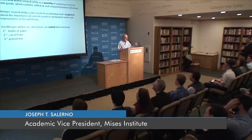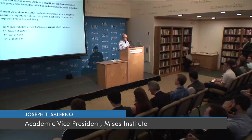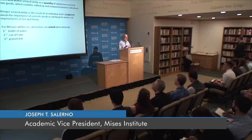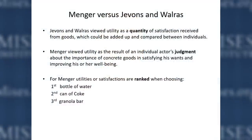To sum up: Jevons and Walras viewed marginal utility — or utility, which is another term for satisfaction — as a quantity that could actually be added up, subtracted, divided, multiplied. You could perform mathematical operations on it. But Menger viewed utility as a result of individual actors' judgment about how important something was to their own welfare — whether one thing improved their welfare more than another. For Menger, utility was not cardinal — you couldn't put numbers on it. But you could put ordinal rankings on it; something was more or less important.